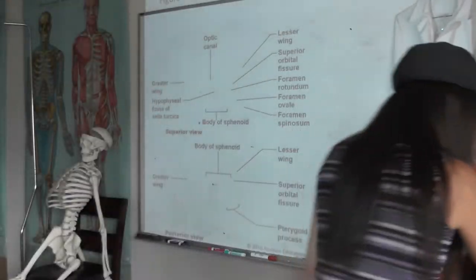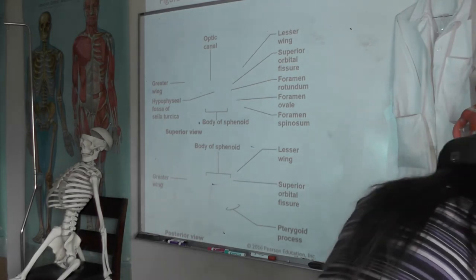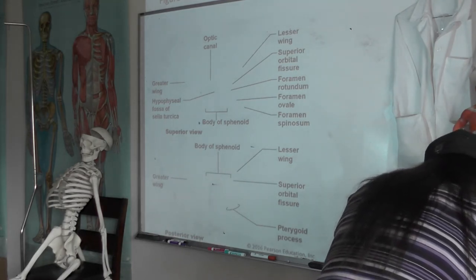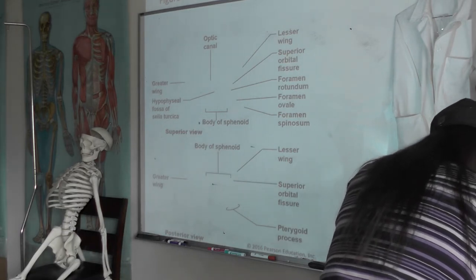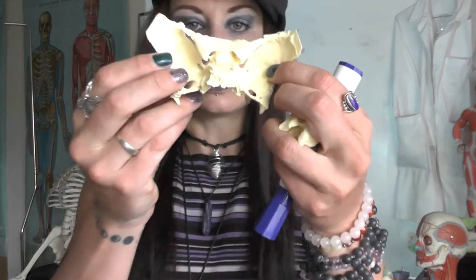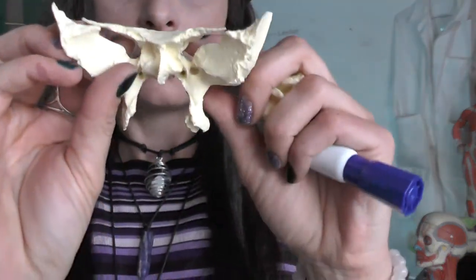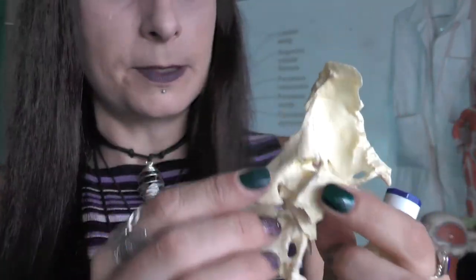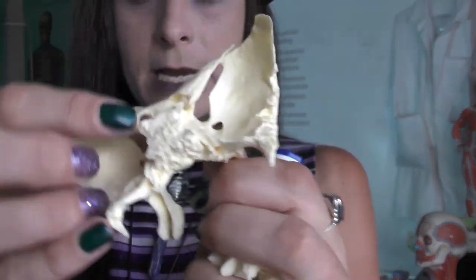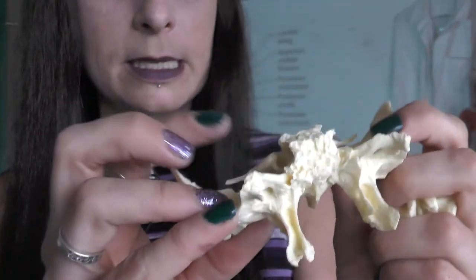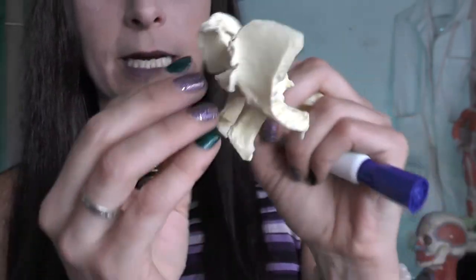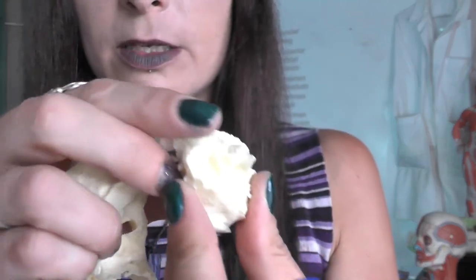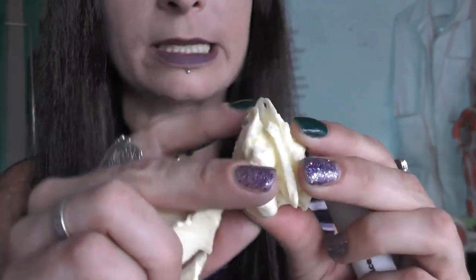I actually have individual sphenoids and ethmoids because they're such cool bones on their own. Here's a sphenoid — Mothman Prophecies, right? These holes right here are the optic canals where your optic nerves come through. This is the sella turcica where your pituitary sits. Our lesser wings, our greater wings down here. This is how it sits in back there behind your frontal bone. And then this is your ethmoid bone. I wish you could touch this because this crista galli or coxcomb is like this sharp protrusion that sticks up here.